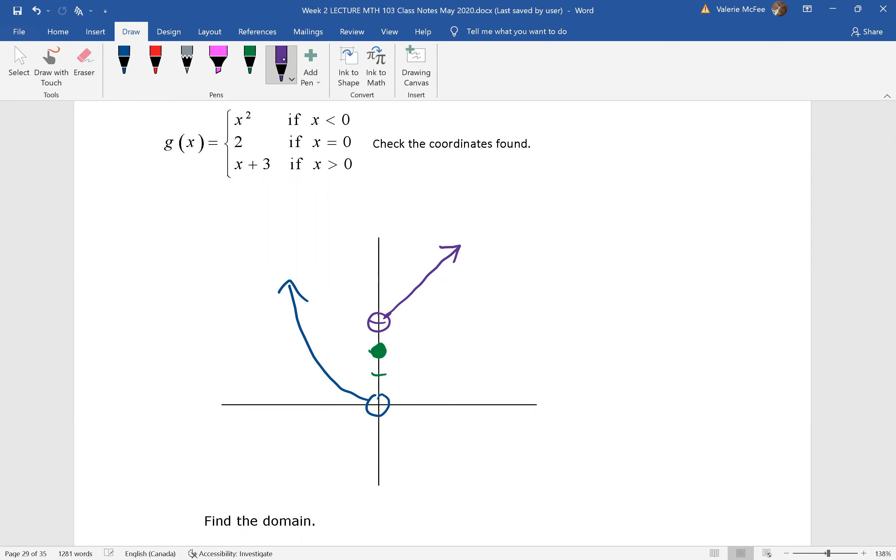Is it a function? Sure it is. No matter where I draw a vertical line, the vertical line intersects the graph exactly once. Even if I draw my vertical line right here, the only place it's intersecting the graph is at my closed circle. The open circles mean there is no graph at the open circle. And that's why when we do these piecewise defined functions, your circles will line up, but only one of them will be closed.